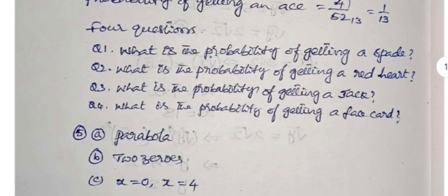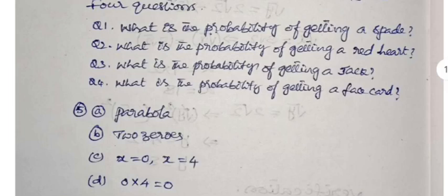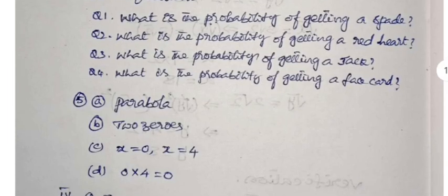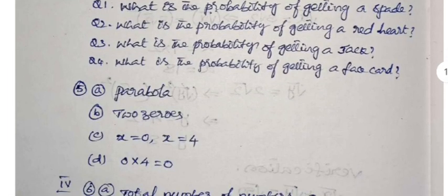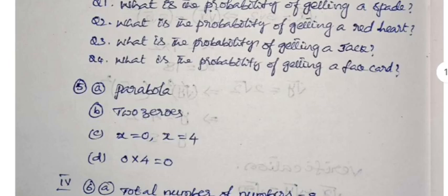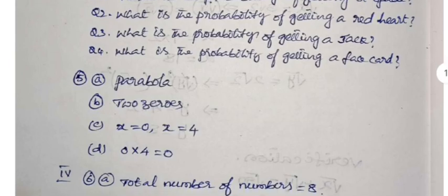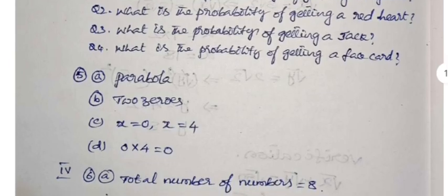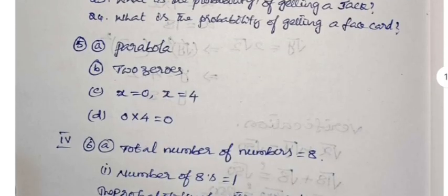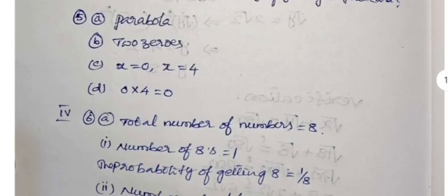Answer 4: Total number of cards is equal to 52, number of aces is equal to 4. Probability of getting an ace is 4 by 52, that is 1 by 13. Four such questions are required to be prepared. The questions prepared are: What is the probability of getting a spade? What is the probability of getting a red heart? What is the probability of getting a jack? What is the probability of getting a face card?